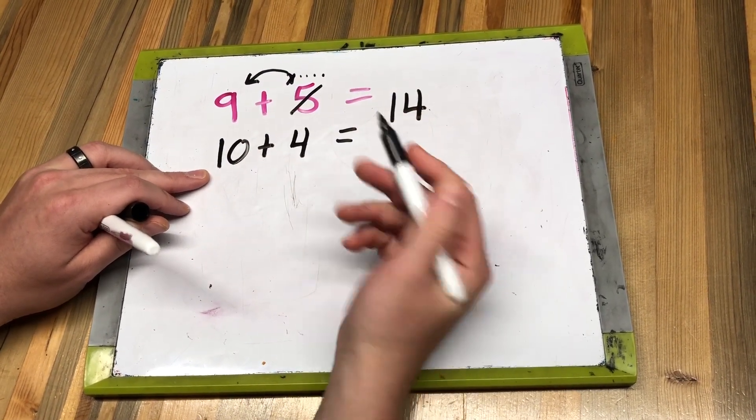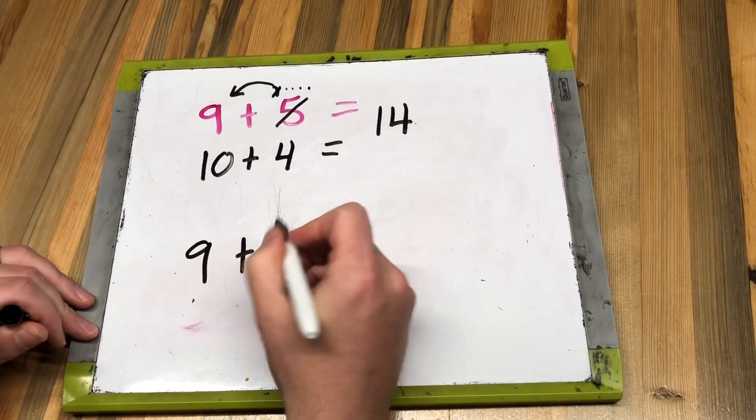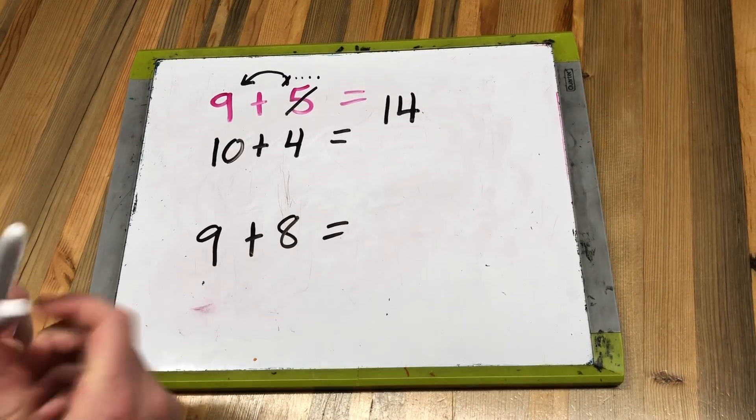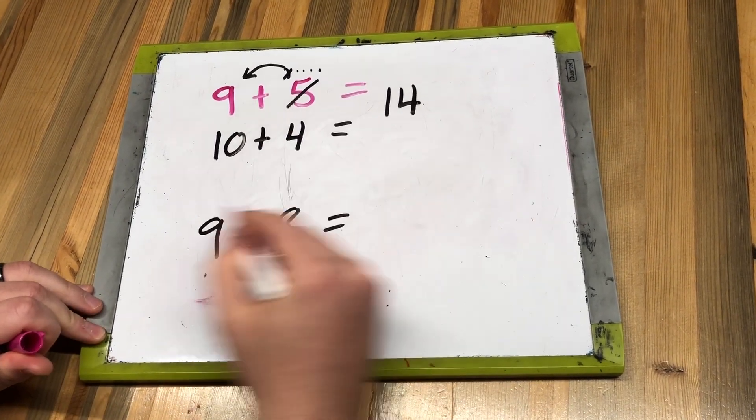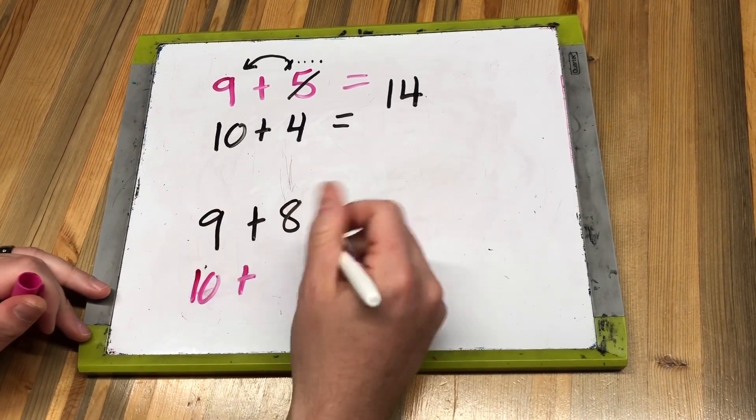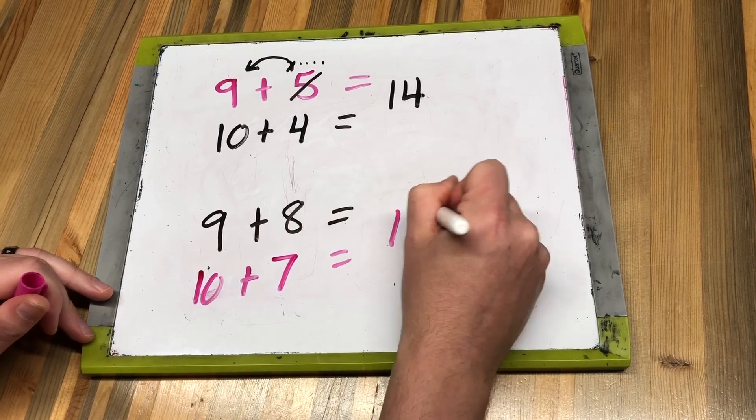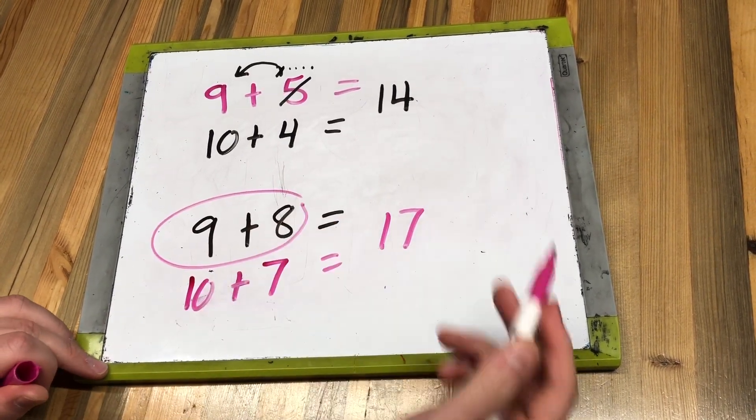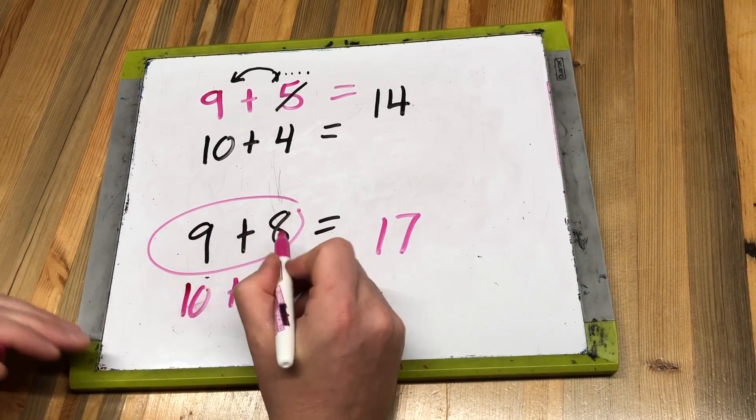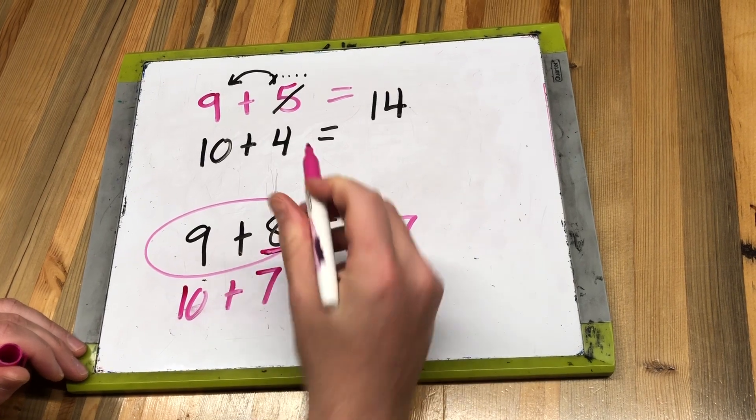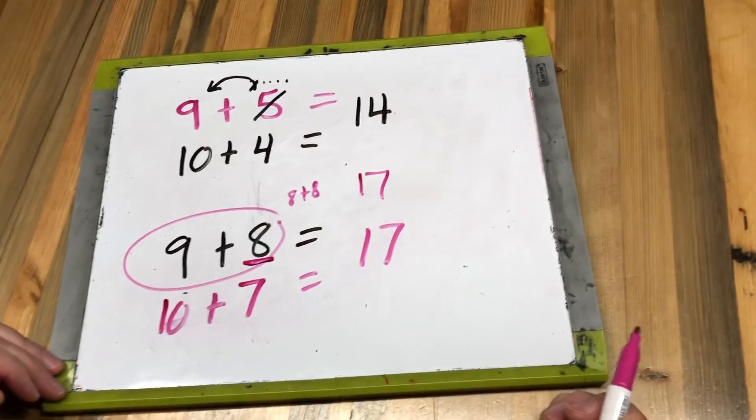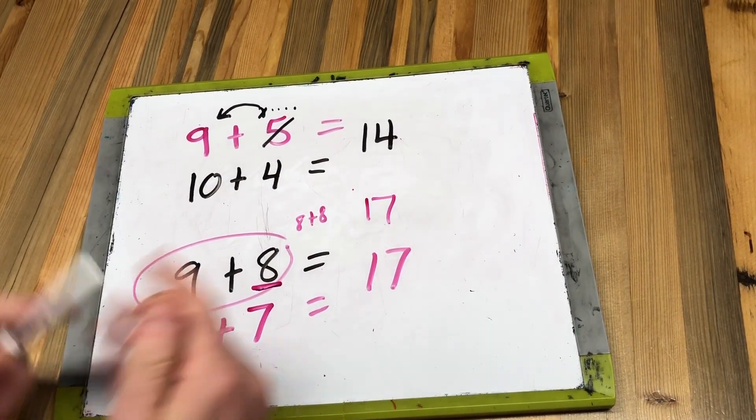Let's do another one. Nine plus eight. This one's really interesting, we'll talk about it in a second. If I'm using a group of ten, nine's really close to ten. Ten plus—I took one away here—seven. Seventeen. This one's really interesting because eight and nine are next to each other on a number line. You could also think, oh, I know eight plus eight is sixteen, one more is seventeen. So sometimes you can make a group of ten, sometimes you can use a double.